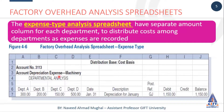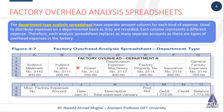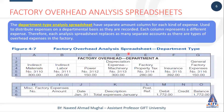Lekin agar hamare paas different departments hain, toh hum log expense ke account ke sath hi yeh wale departments ke columns attach kar denge. Is ko hum log departmental analysis kehte hain. Aur yeh basically is depreciation ke expense ka account hai. Is tariqe se hum har expense ke liye is tarah ki ek sheet banayenge aur is ko hum log factory overhead analysis sheet kehte hain - expense wise. So this is the sheet, hum Excel sheet ke andar is ko yahaan peh record karte hain.